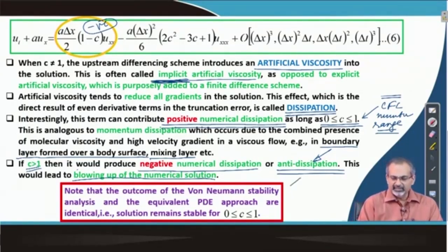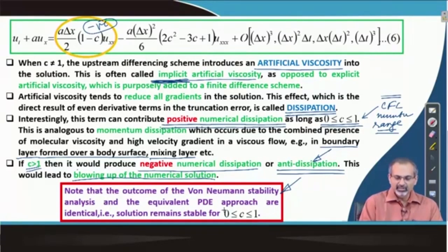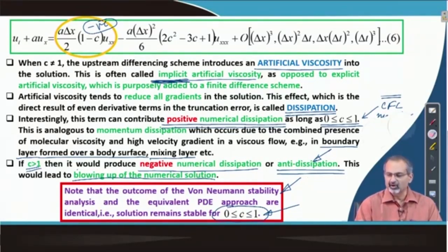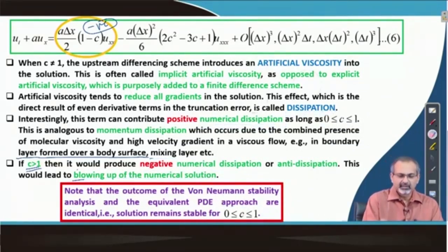Interestingly, this outcome — that keeping the artificial viscosity coefficient positive gives stability — is the same outcome we saw through the von Neumann stability analysis. Both approaches have led to the same outcome: the CFL number value should be bounded in this manner so that we can keep the system stable. This is a very interesting outcome seen through two apparently different ways of looking at the same problem.